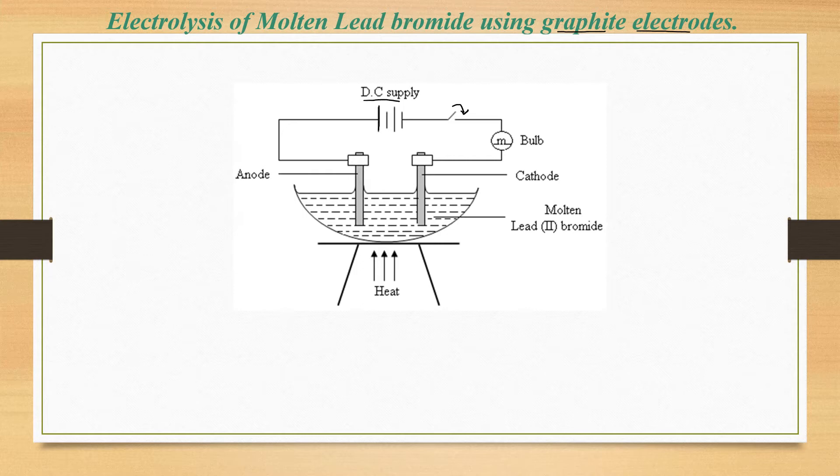Once we close our switch, our electrodes will become polarized depending on their position to the DC supply. We shall have a positive terminal here of the battery, that means this electrode will become our anode, the one connected to the positive terminal, while the other one will become the negative electrode, which is the cathode.